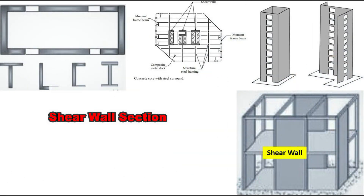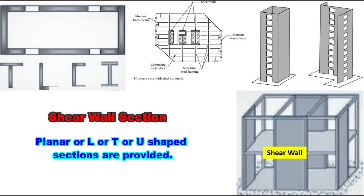Next is the shear wall section — how the shear walls are provided. Shear walls may be provided in the form of planar, but are often of L, T, I, or U-shaped sections. The shape and plan position of shear wall influences the behavior of the structure.